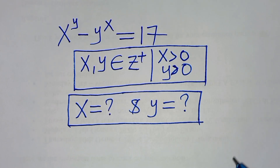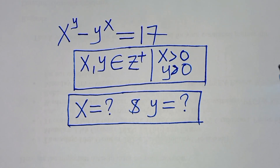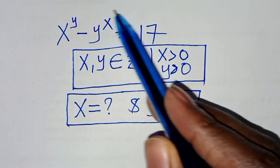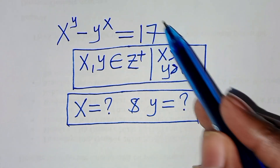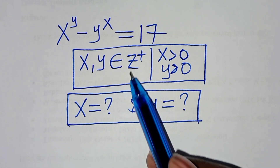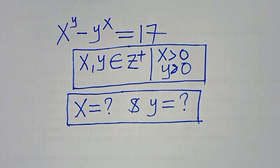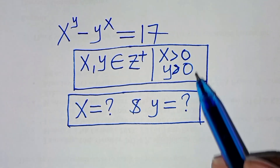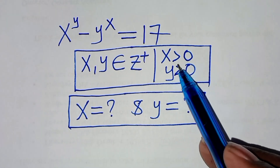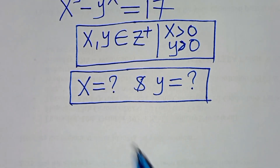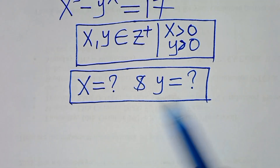Hello everyone, you are welcome to solve this nice algebra problem, which is x to the power of y minus y to the power of x, and this is equal to 17. Given that x and y are members of positive integers, with x greater than 0 and y greater than 0, what is the value of x and what is the value of y?